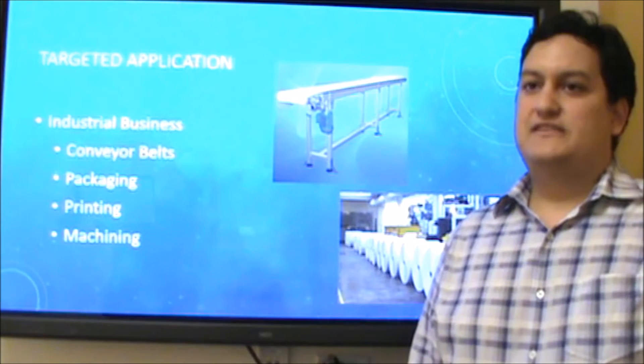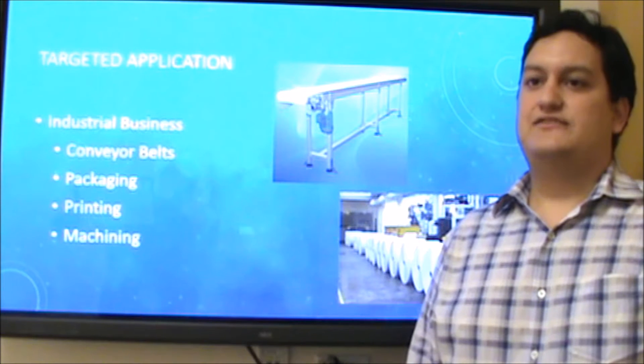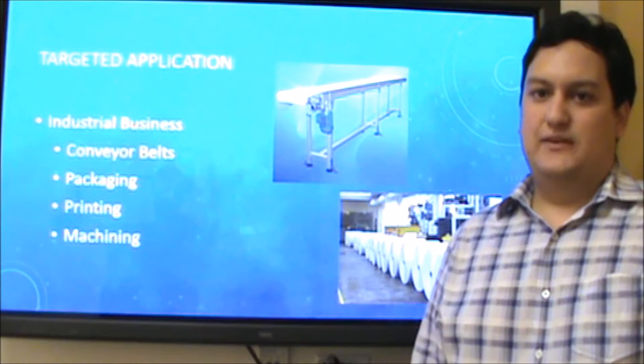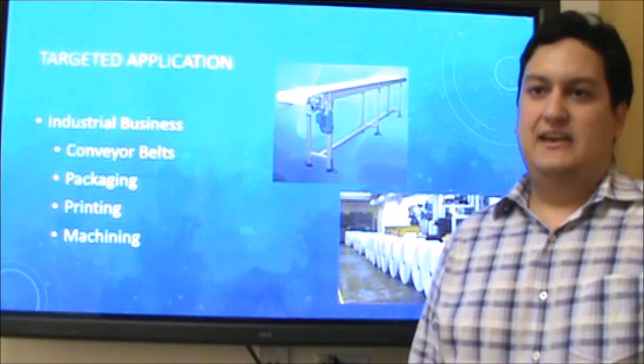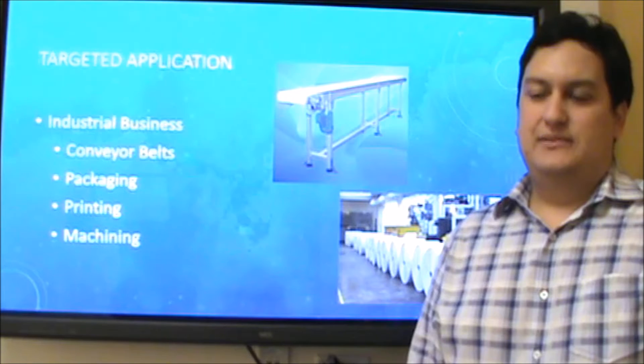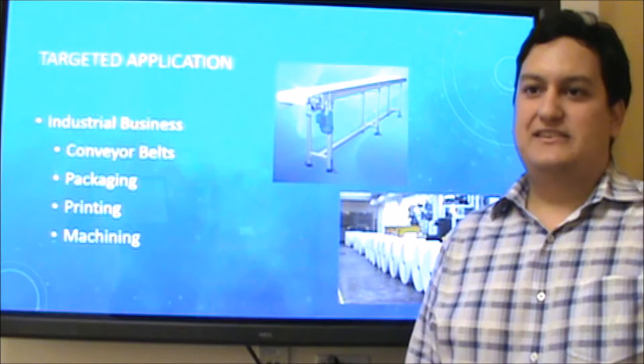With our Gearbox, we aim to target applications more in the industrial business. Conveyor belts are an excellent example because our gears can help regulate and maintain the speed needed as objects are passed along. We believe our Gearbox will be used in businesses such as printing, packaging, and machining.